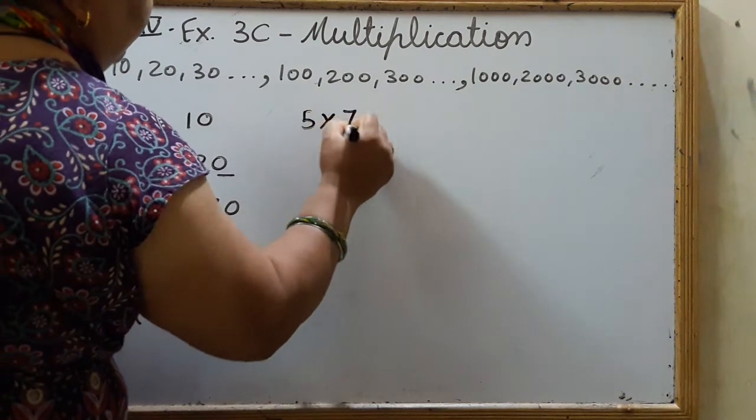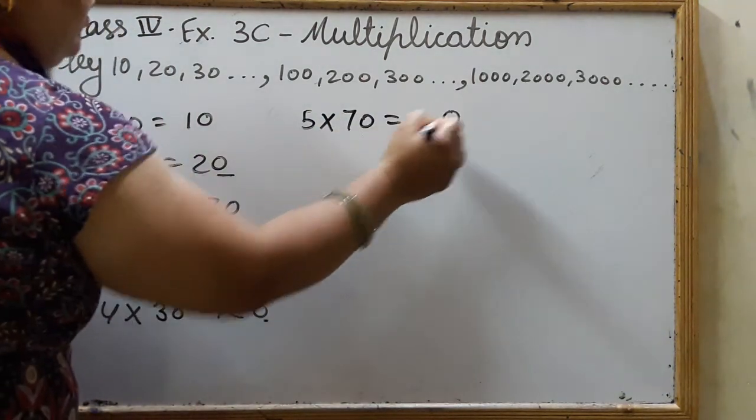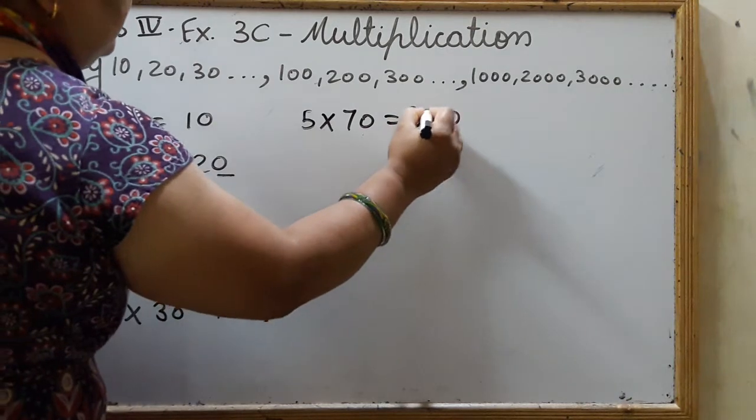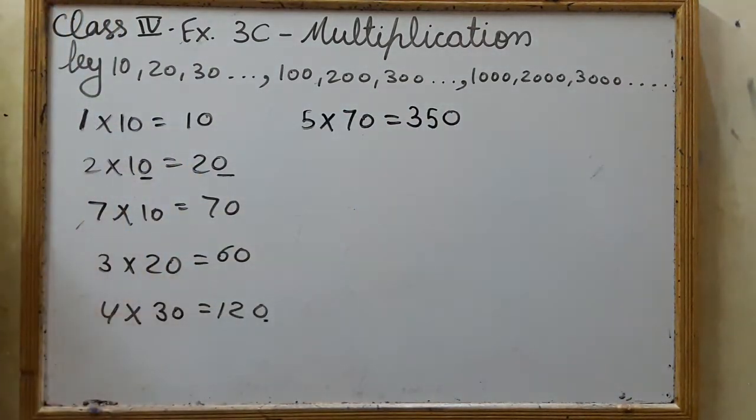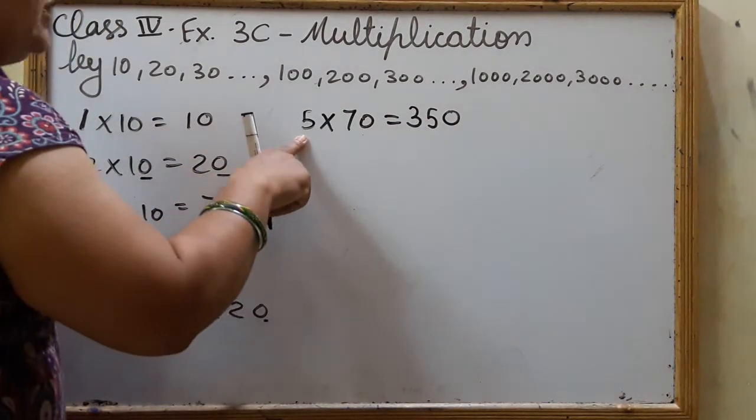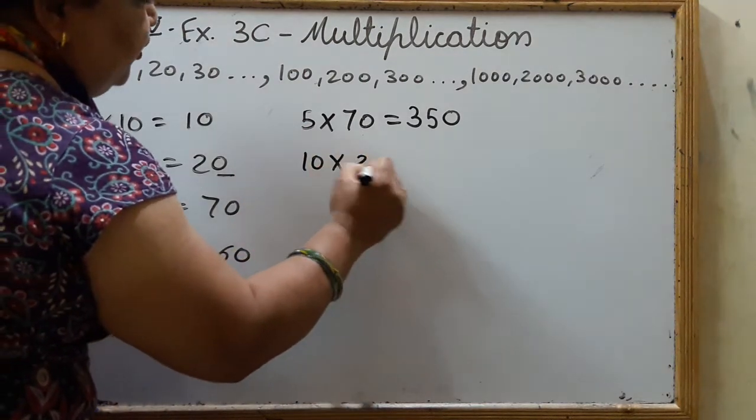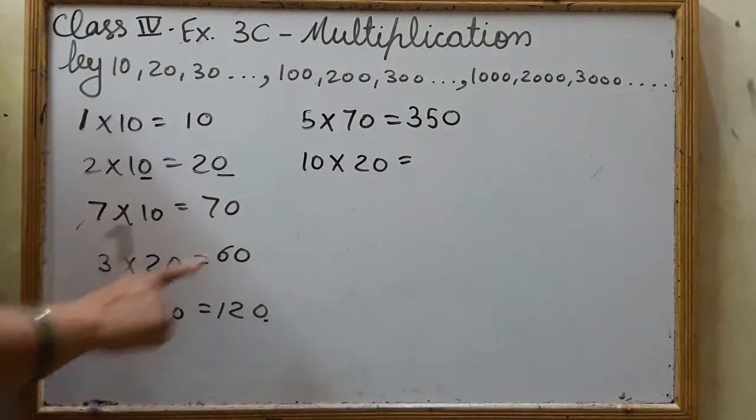5 into 70. See, zero and 5 7s are 35. Okay, what if here is also zero? Like 10 into 20. Then what we will do?